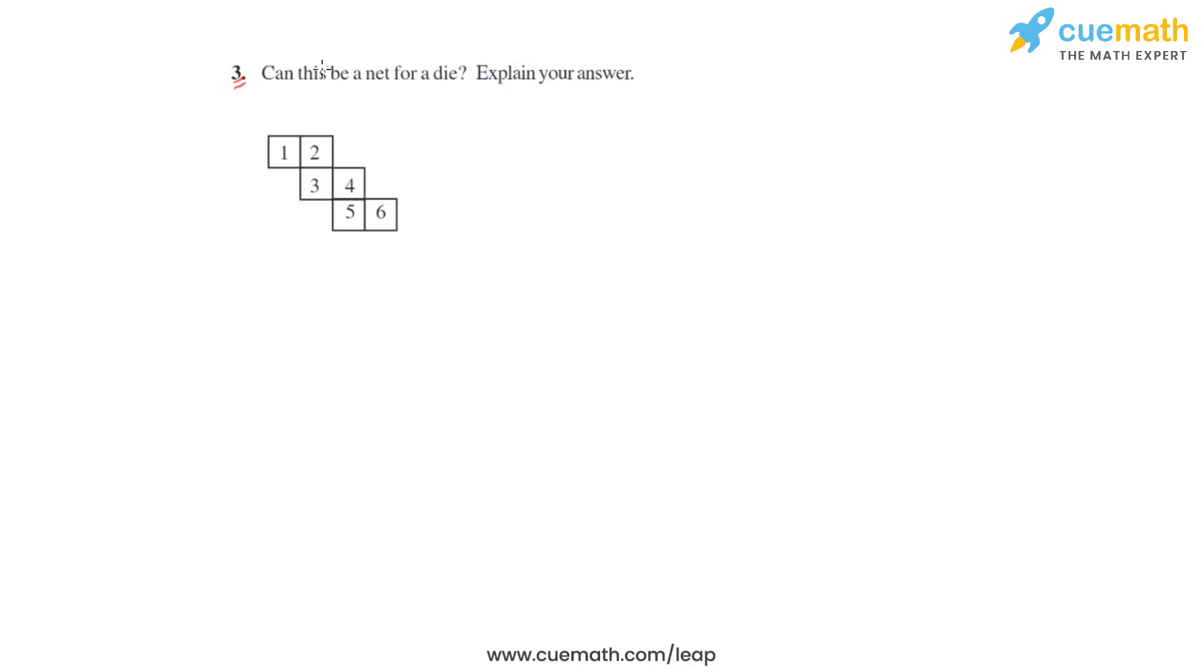Question number three of this exercise gives us a net for which we will have to form a die. We will also have to give an explanation for the answer which we get.